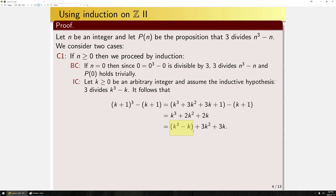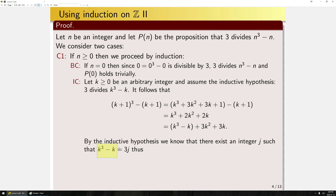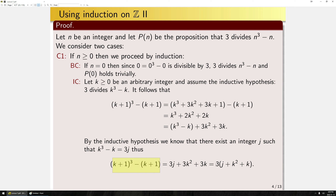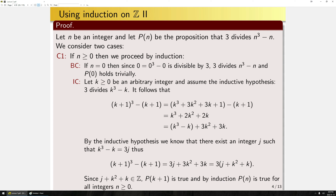By the inductive hypothesis, there exists an integer J such that K cubed minus K = 3J. Substituting 3J in, every remaining term has a factor of 3, so we factor out the 3. Since the remaining factor is an integer, by the definition of divisibility P(K+1) is true. Thus, by induction, P(N) is true for all integers N greater than or equal to 0. Case 1 is complete.